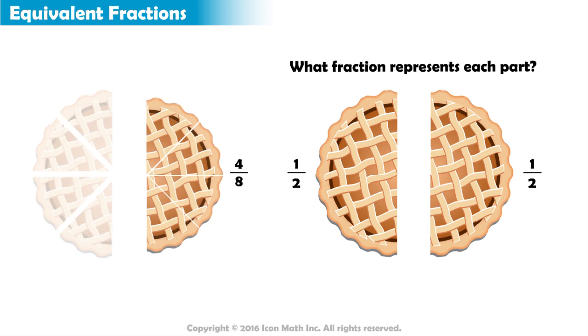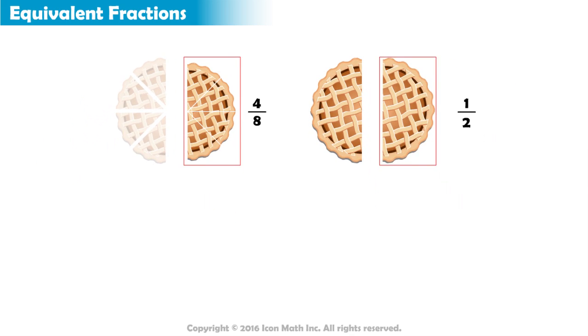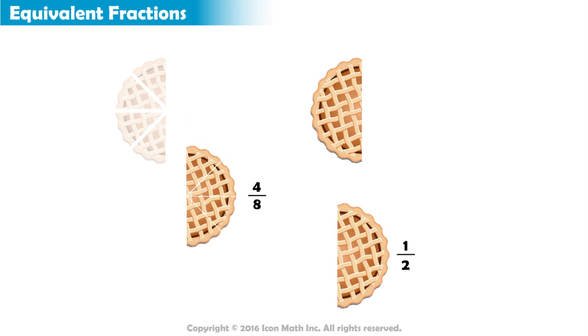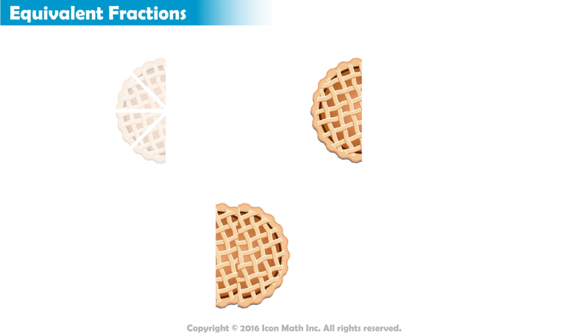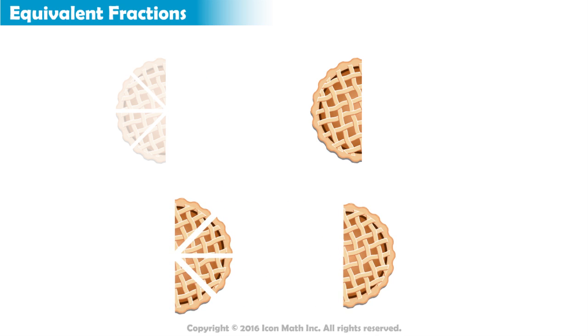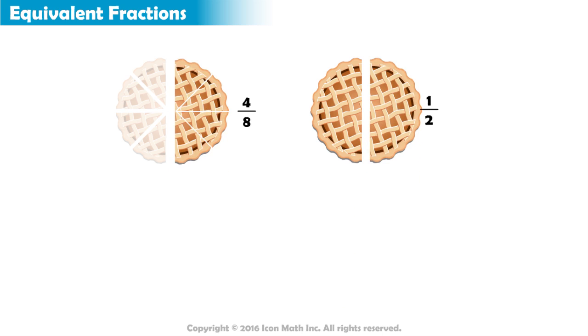Now let's have a closer look at the two pies. Do you see something interesting? We have taken 4 eighths of the first pie and one half of the second one. But look how the 4 eighths of the first pie is exactly the same size as one half of the second pie. One half of this pie and 4 eighths of the other represent equal amounts. It is just that this half is cut into four pieces. So we say that one half and 4 eighths are equivalent fractions.